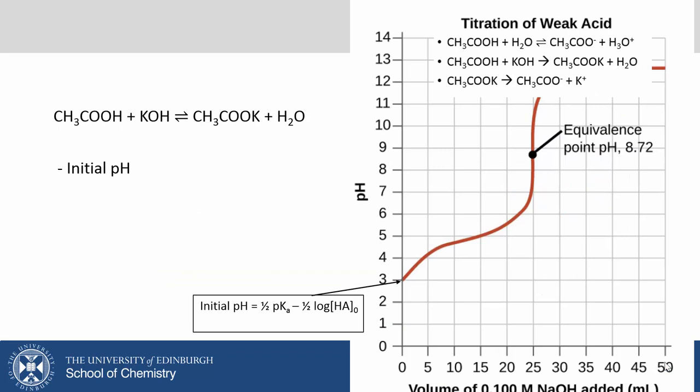Let's go through the titration curve. The initial pH of course is higher than we would expect for the titration of a strong acid. Because we have a weak acid we expect a higher pH. This initial pH can be calculated as half the pKa minus log of the initial concentration of the acid.